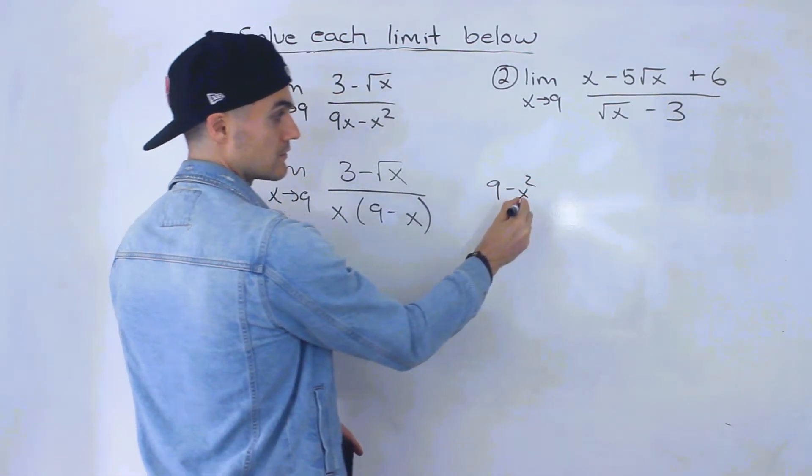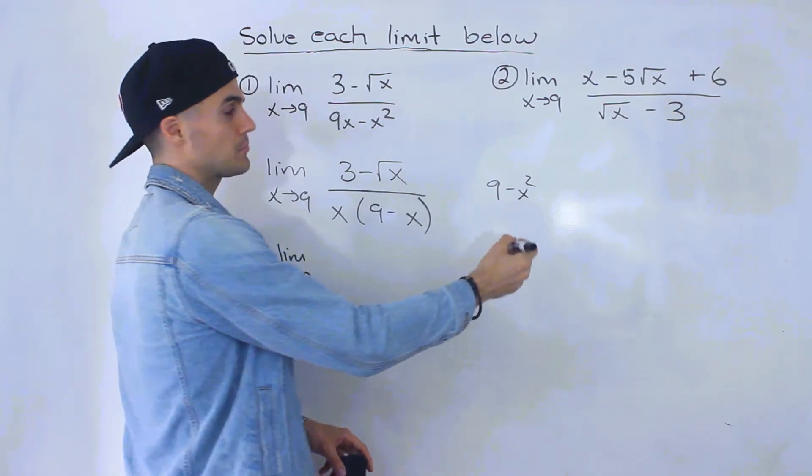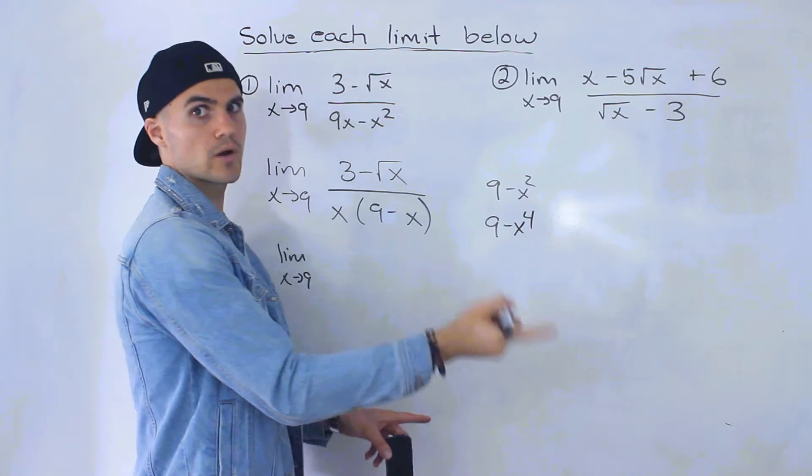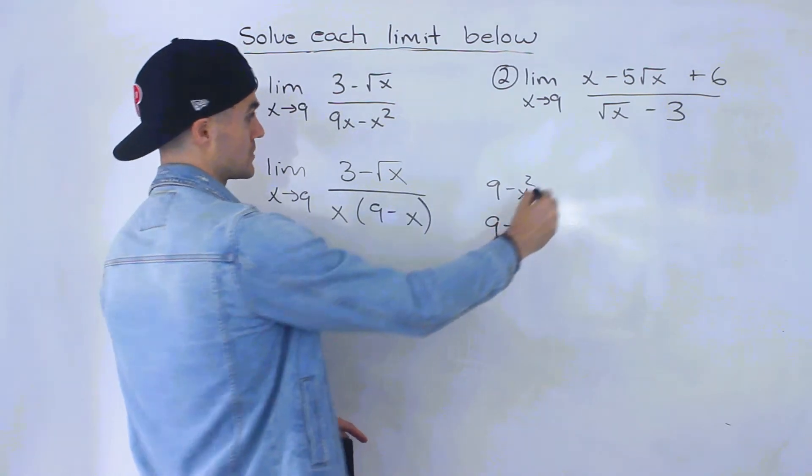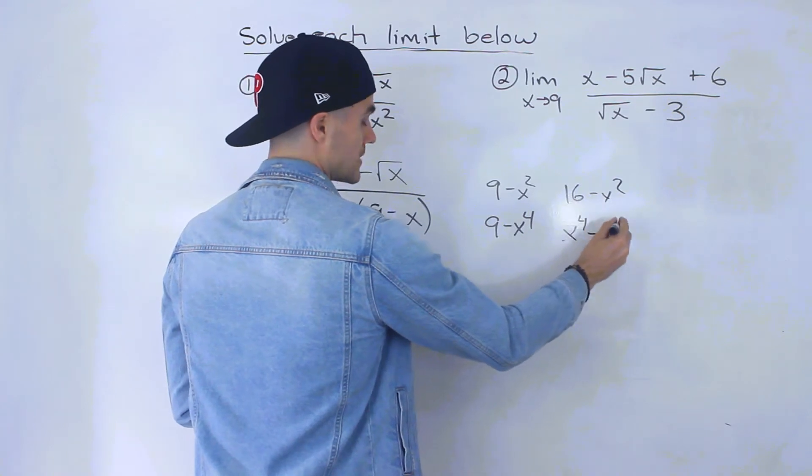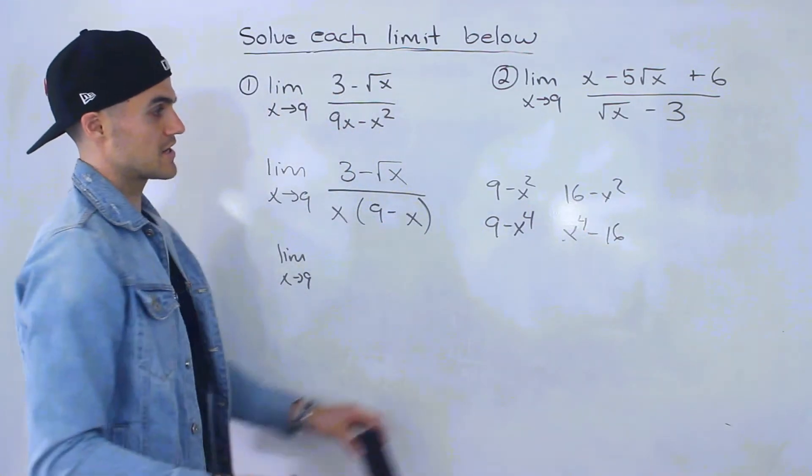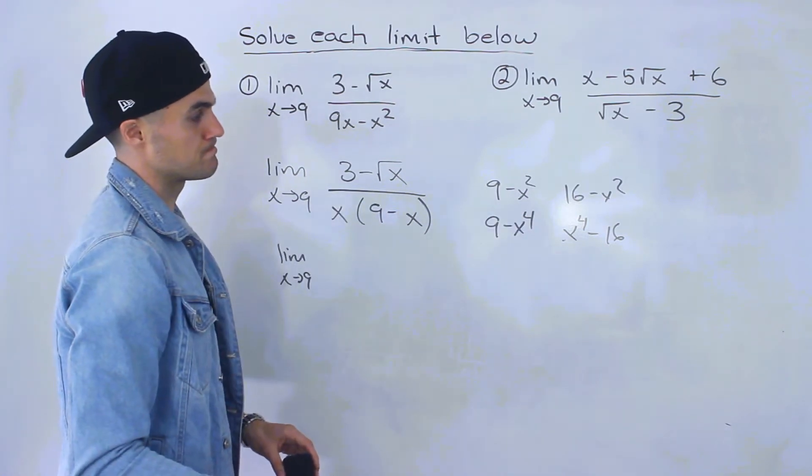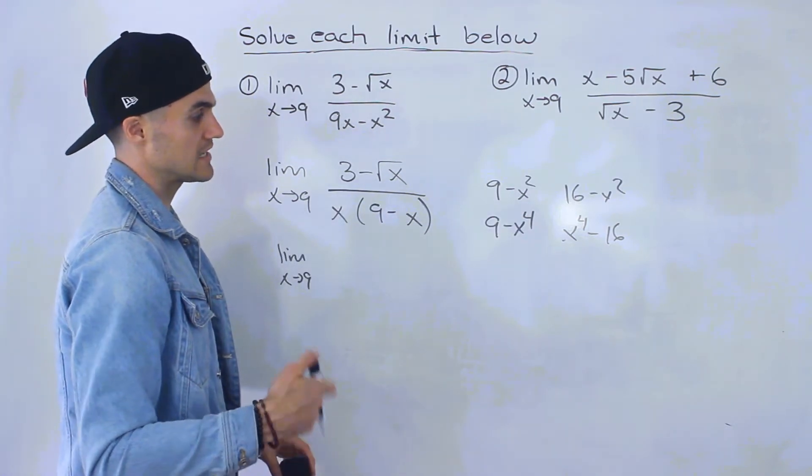For example, 9 minus x squared factors as (3 minus x)(3 plus x). Or 9 minus x to the 4 factors as (3 minus x squared)(3 plus x squared). Or 16 minus x squared, or x to the power of 4 minus 16. That exponent is usually even.